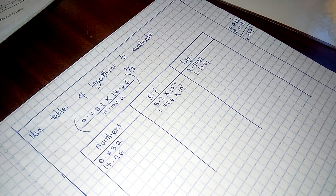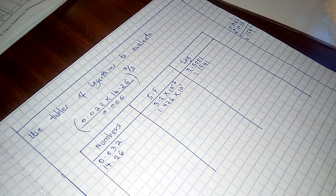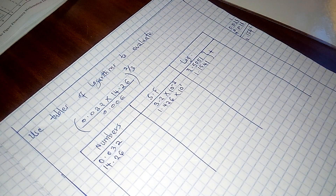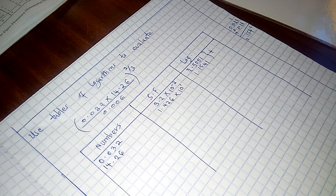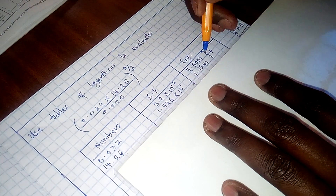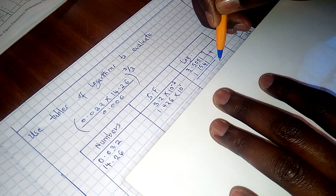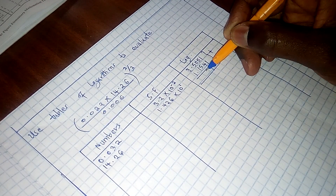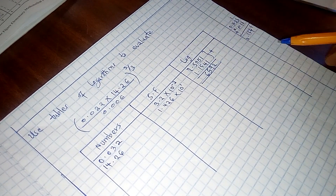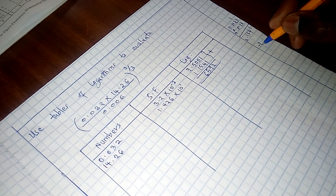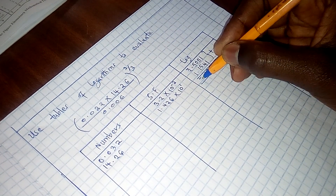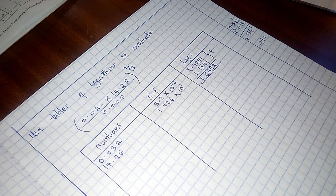Now, looking at the equation, these two numbers in the numerator are being multiplied. From the laws of logarithms, when we are multiplying two numbers, that is equivalent to adding their logarithms. So we add bar 2.5051 and 1.1541. Adding: 1+1=2, 5+4=9, 0+5=5, 5+1=6, and bar 2 plus 1 is negative 2 plus 1, which is negative 1, written as bar 1. So we get bar 1.9596. We are done with the numerator.